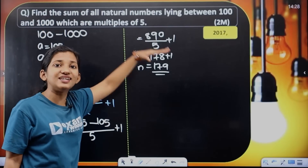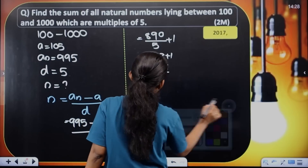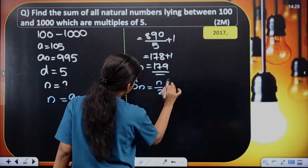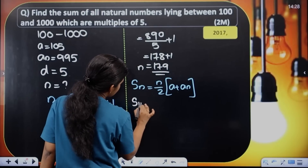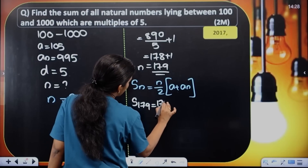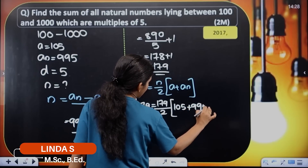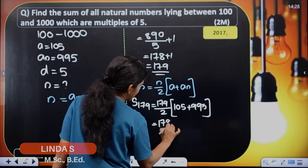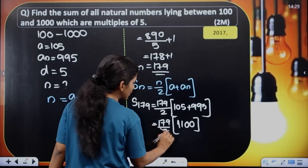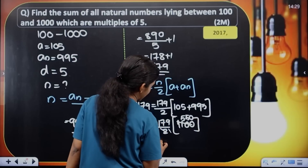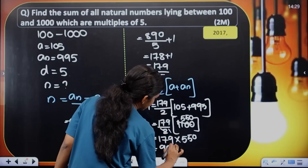There are 179 terms. Now we find the sum using Sn equals n by 2 into (a plus an). Substituting: S179 equals 179 divided by 2 into (105 plus 995). That is 179 by 2 into 1100, which gives 179 into 550, equal to 98,450.